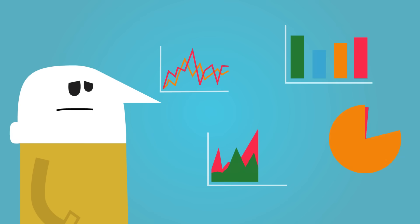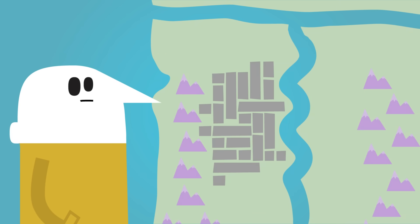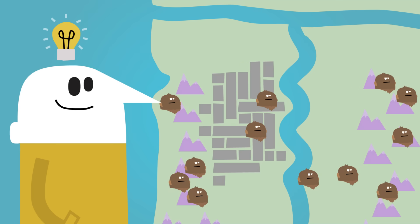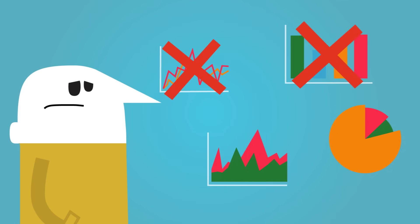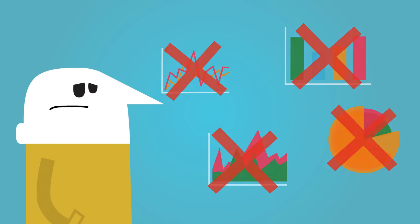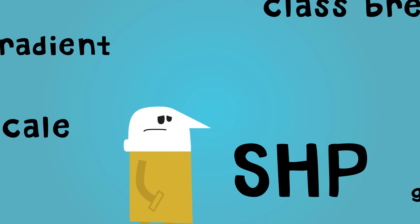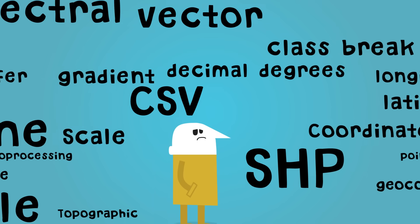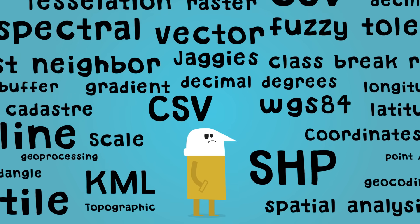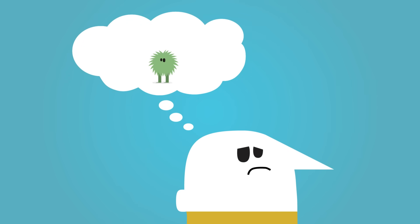This is how you visualize it. And this is how you should visualize it. Because it's impossible to really understand your data unless you map it. But there's no chart for making a map, and those high-tech mapping technologies are way too complicated and expensive. Seriously, what does fuzzy tolerance and all that other stuff mean anyway?